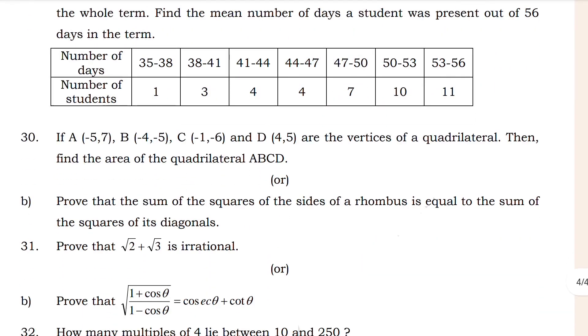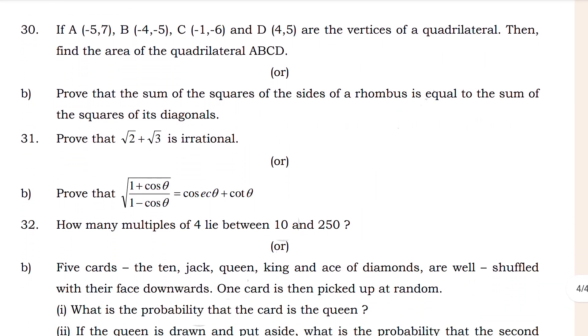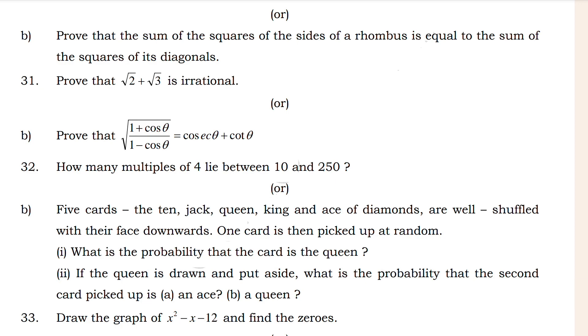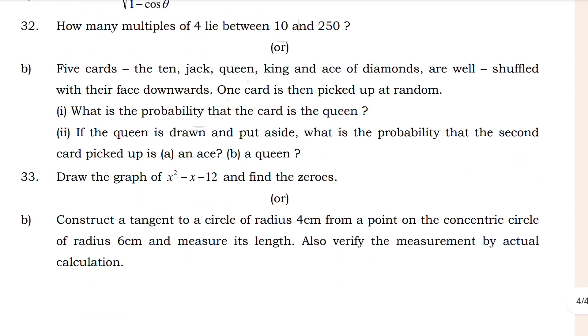Let's see 31, that's the vertices of quadrilateral, it's also important. And 31 is very very important: prove that √2 + √3 is irrational. This is a very important question, you have to mark that one, and 31a and b both of them.